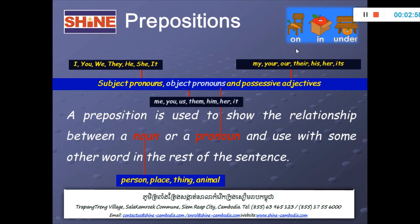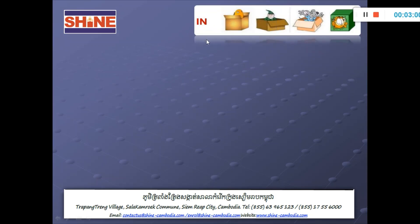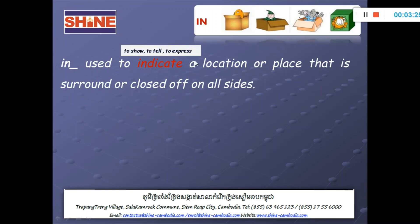Now, let's go to our main point about on, in, and under. First we will learn about 'in.' In is used to indicate a location or place that is surrounded or enclosed on all sides. So, what does it mean? Indicate means to show, to tell, or to express.